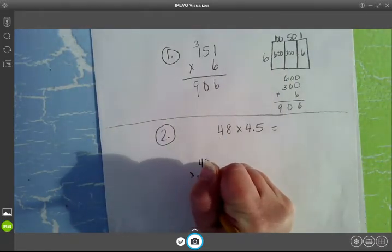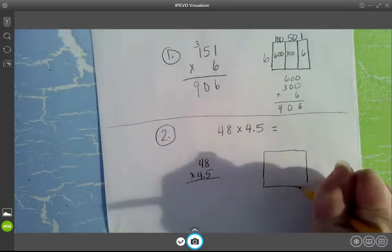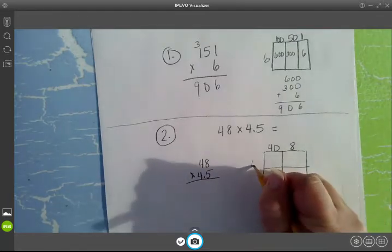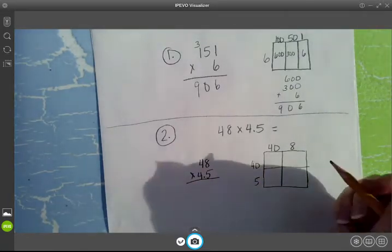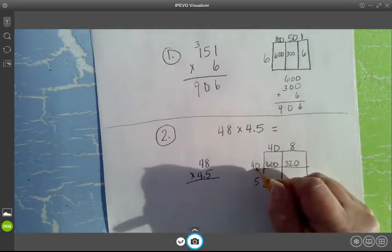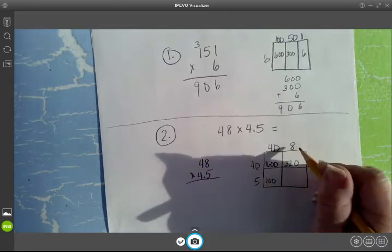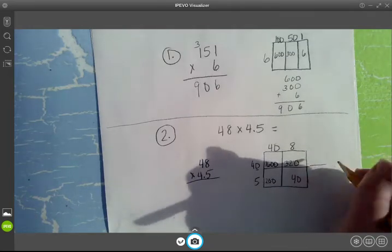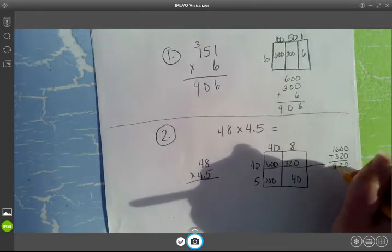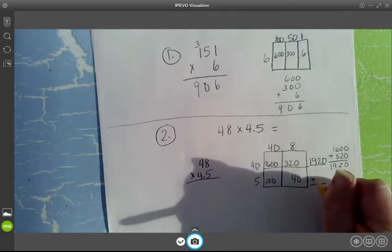48 times 4.5, 48 times 45, 4 times 4 is 16, and my two zeros, 4 times 8 is 32, and I have one zero, 5 times 40, 200, 20, and then my zero, 5 times 8 is 40. 1,600 plus 320 gives me a total of 1,920. 240, 200 plus 40 gives me a total of 240.